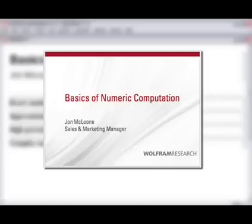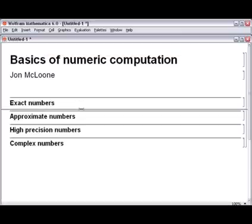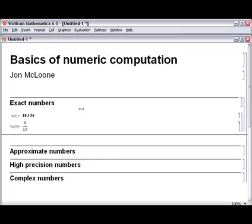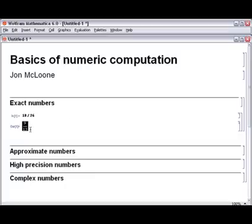Because Mathematica has much more extensive support for all kinds of numeric computation than most systems, it's important to understand the difference between different kinds of numbers. Let's start with exact numbers. Whenever you give exact input into Mathematica, it attempts to give you exact output. So since there's no decimal representation for 9 thirteenths that is exact, it can only return this as a fraction.